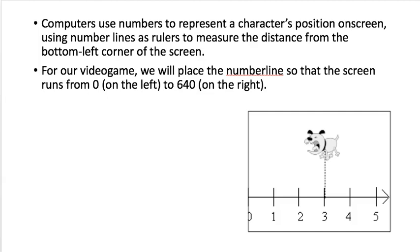Computers, like you learned some this summer, use numbers to represent a character's position on the screen. Just like a number line. On the bottom of the screen, we'll call it zero - the bottom left of your screen or of the game area. You can see this dog right here. Here's his number line. He's just moving left to right. He's at position three, at least the middle of him. He could move anywhere in this gaming system from zero on the left to 640 on the right.